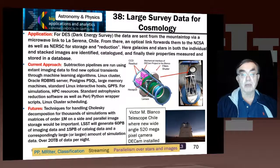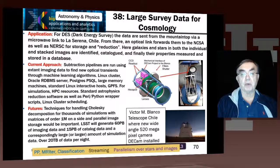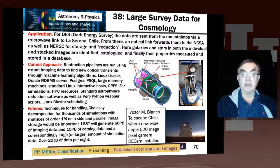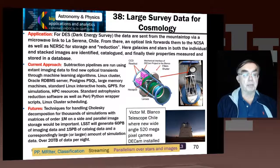Here we have the Dark Energy Survey, where the data comes from a telescope in Chile. It goes from Chile to NCSA and also to Lawrence Berkeley for storage and processing. The galaxies, stars, and various images and surveys compare images in their catalog, and their properties are measured and stored in a database.